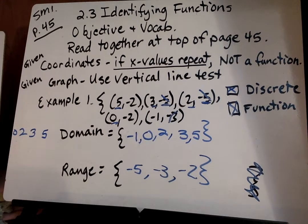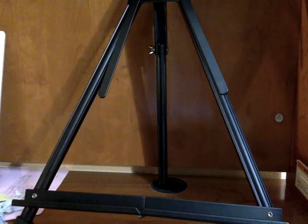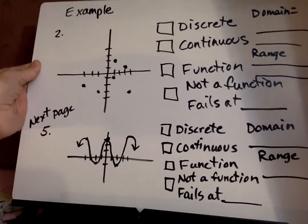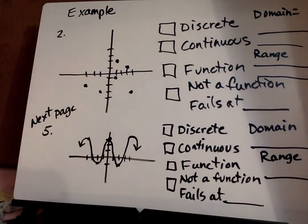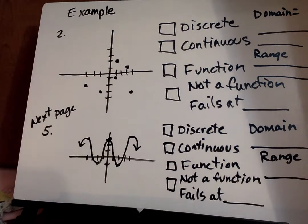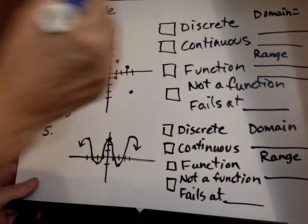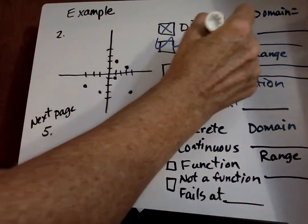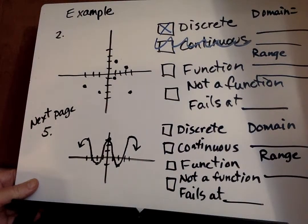Okay. Now we're going to jump. We're going to do number 2. Go over number 2 on that same page. And here's our graph. So we want to say whether it's discrete or continuous and if it's a set of points it's going to be what? Discrete. So it's not continuous. Okay.